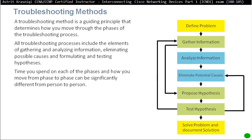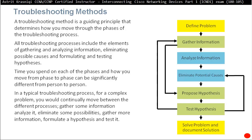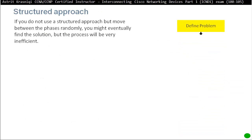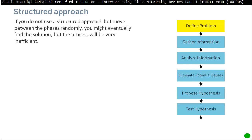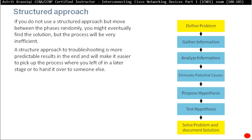The more experience you have, the more quickly you'll move from phase to phase. Less experience means you may spend more time on each phase. In a typical troubleshooting process for a complex problem, you would continually move between phases — gathering information, analyzing it, eliminating possibilities, formulating a hypothesis, and testing it. It's important to document every step. A structured approach is more predictable and results in better outcomes.